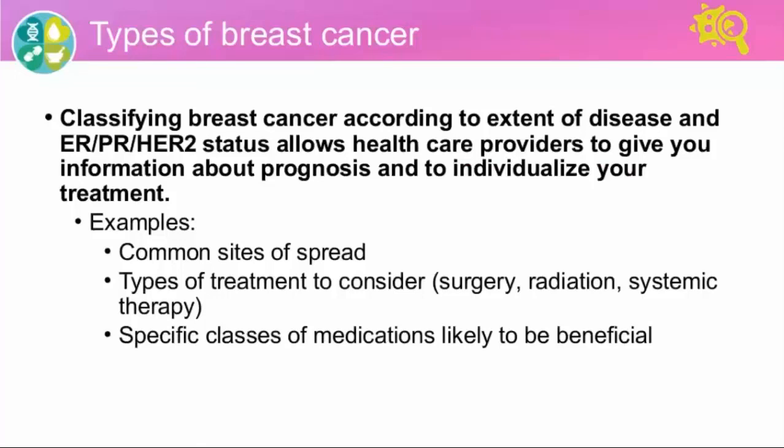By classifying breast cancer according to the extent of disease and according to the estrogen receptor, progesterone receptor, and HER2 status, your healthcare providers can give you information about your prognosis and individualize your therapy. For example, the most common sites to which breast cancer spreads will differ according to these markers — brain metastases are a bit more common in HER2 positive breast cancer.